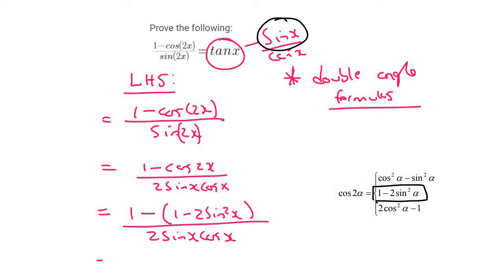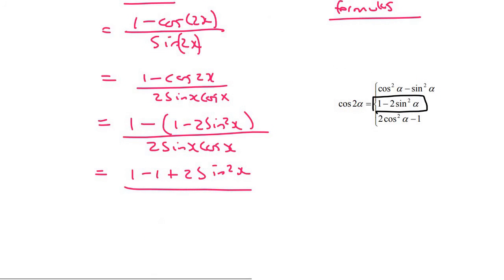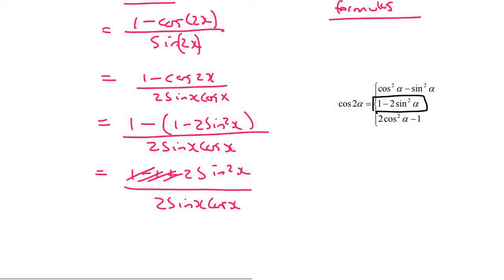We then get rid of the brackets, and that's going to give us 1 minus 1 plus 2 sin squared x, over 2 sin x cos x. Now what you should see is that these ones cancel. And what we can now do is cancel out these twos, cancel out a sin, and then you would still have 1 sin left over. So what we're left with is sin x over cos x.